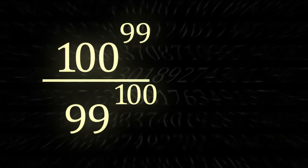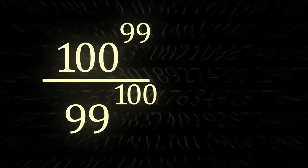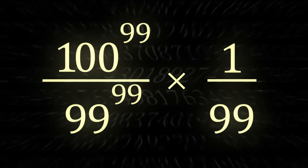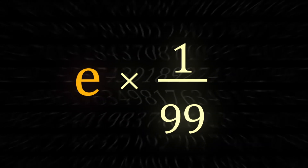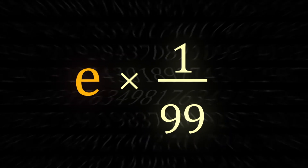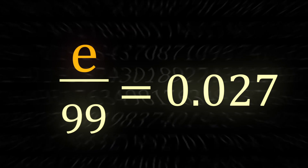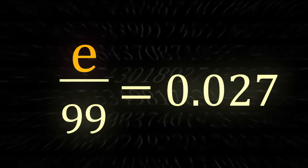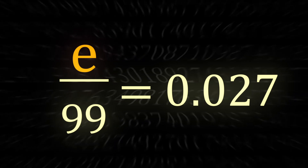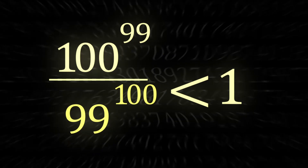Nonetheless, we can replace this with E to denote Euler's number, though keep in mind this is no longer exact, but close enough for it not to matter. In the end, all this is is just E divided by 99, which is around 0.027 — obviously less than 1. We can therefore deduce that 99 to the 100 is indeed the greater value.